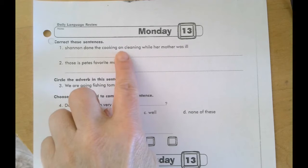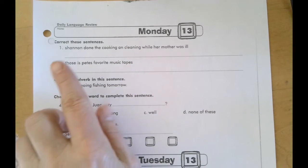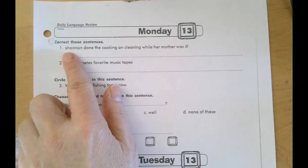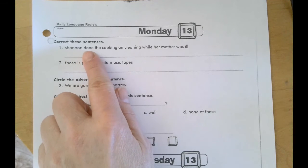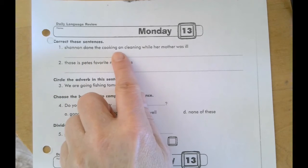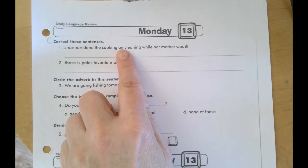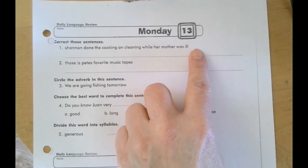Shannon done the cooking and cleaning while her mother was ill. You should all know that there's something that the beginning of the sentence needs, and because it's a name as well. And is this the correct form of the word, the verb do? As well, something's missing here. Cooking and cleaning, and the end of your sentence will also need something.